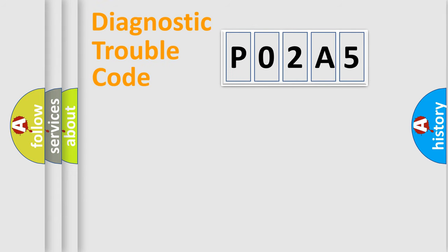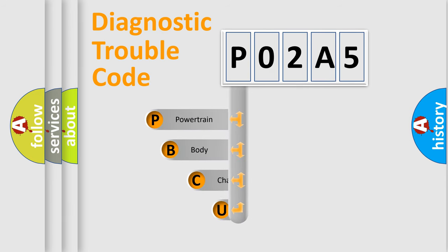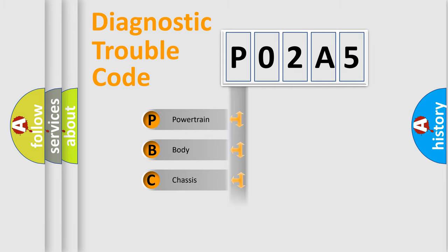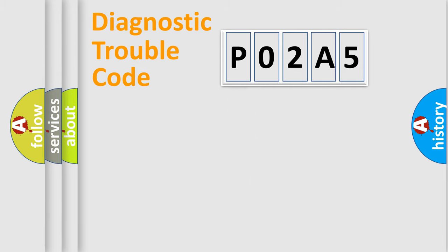Let's do this. First, let's look at the history of diagnostic fault code composition according to the OBD-II protocol, which is unified for all automakers since 2000. We divide the electric system of an automobile into four basic units: Powertrain, Body, Chassis, and Network.